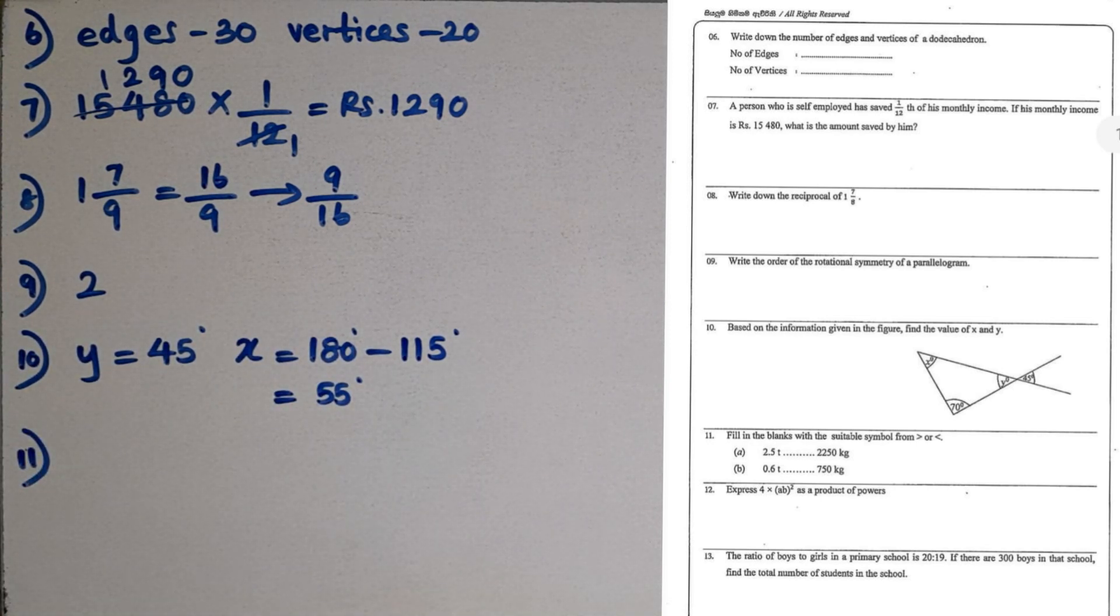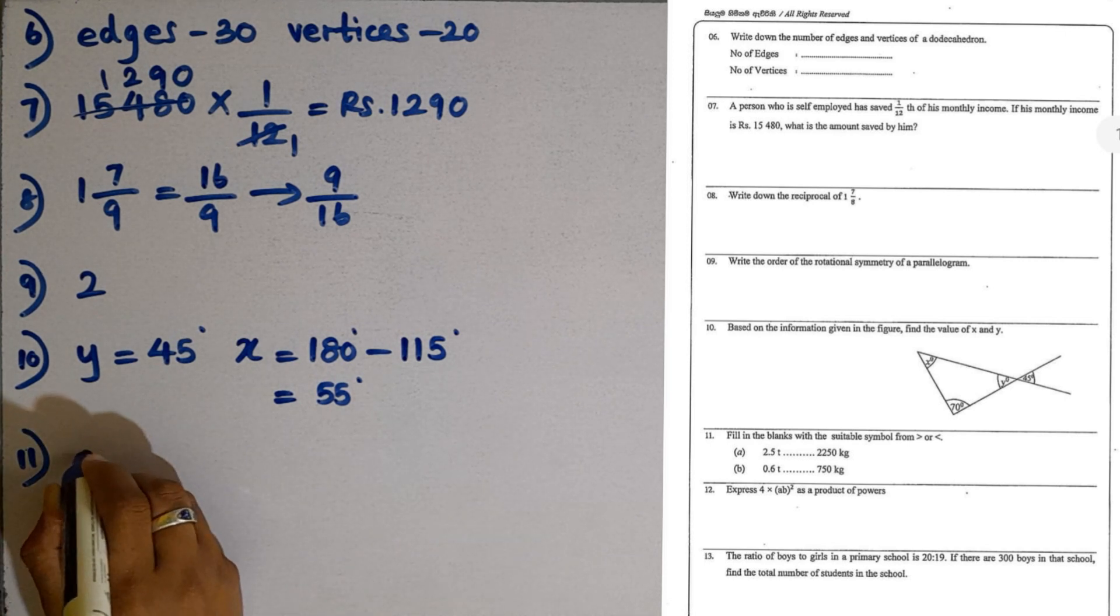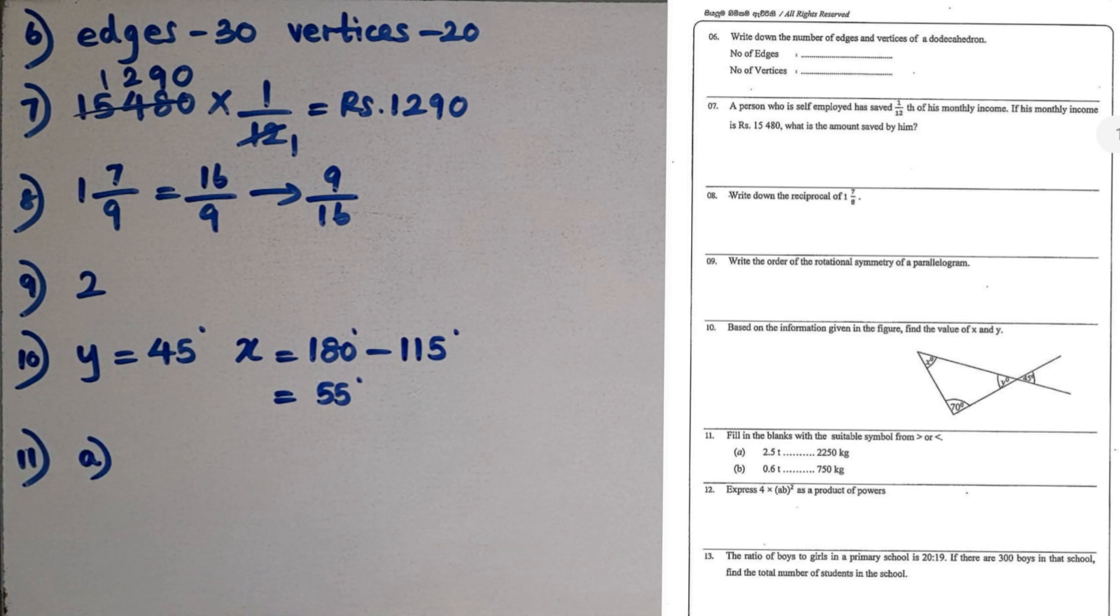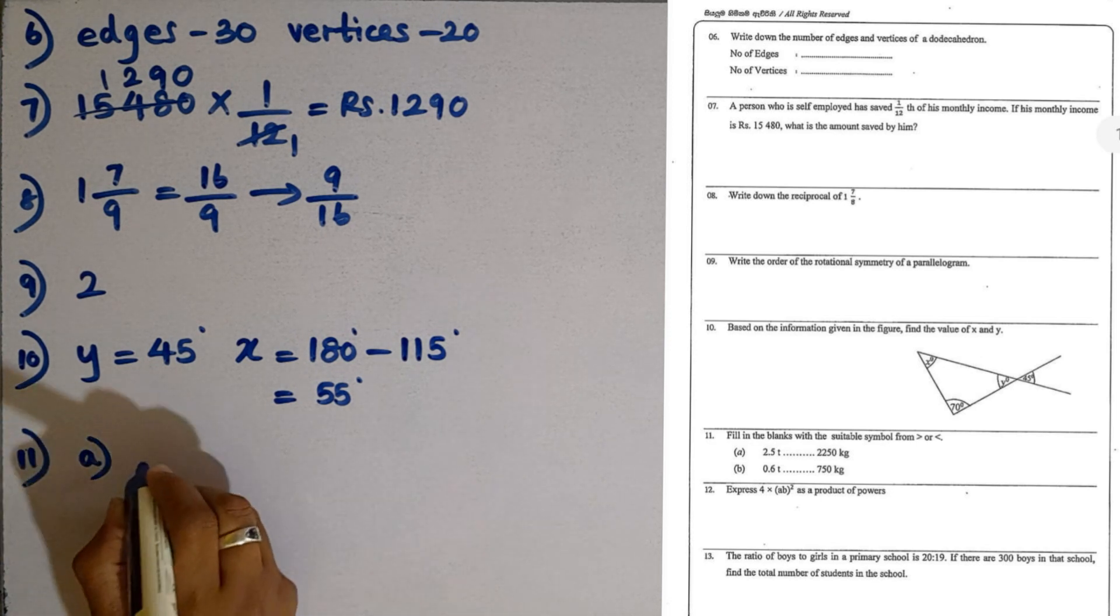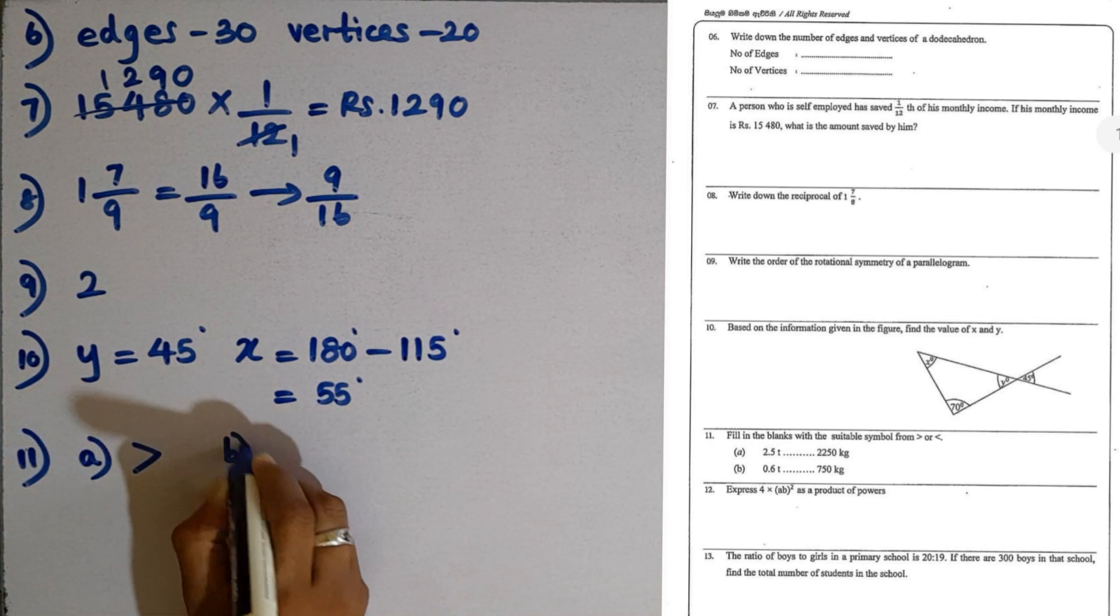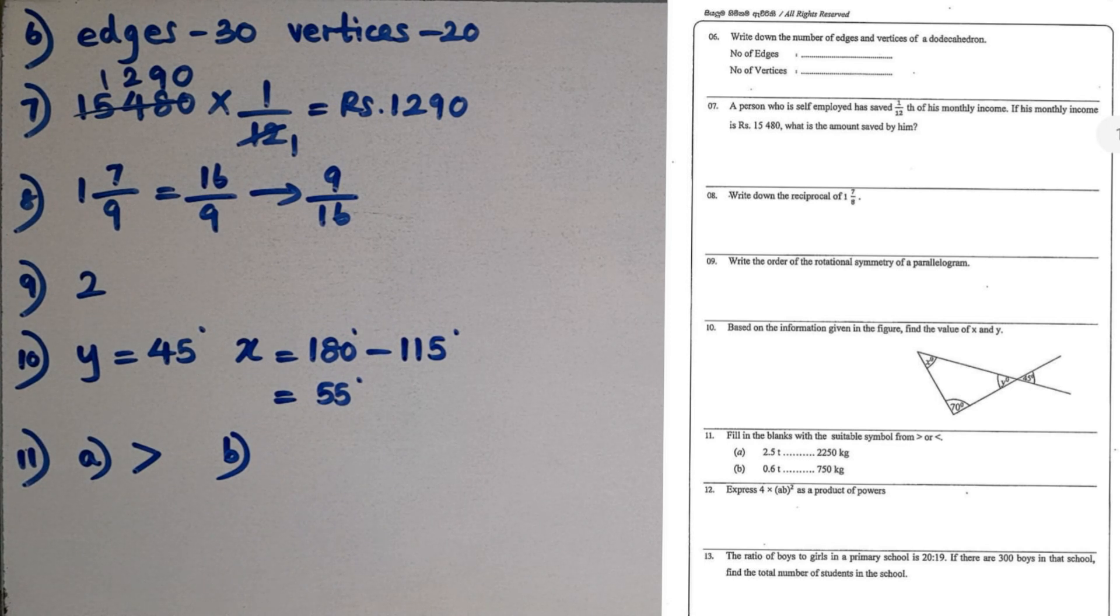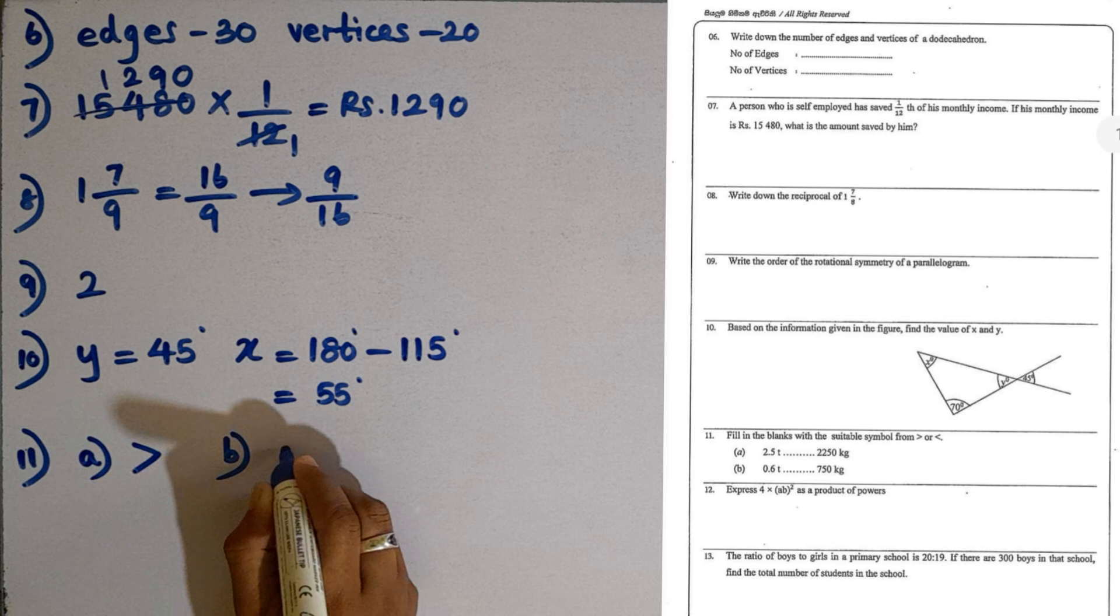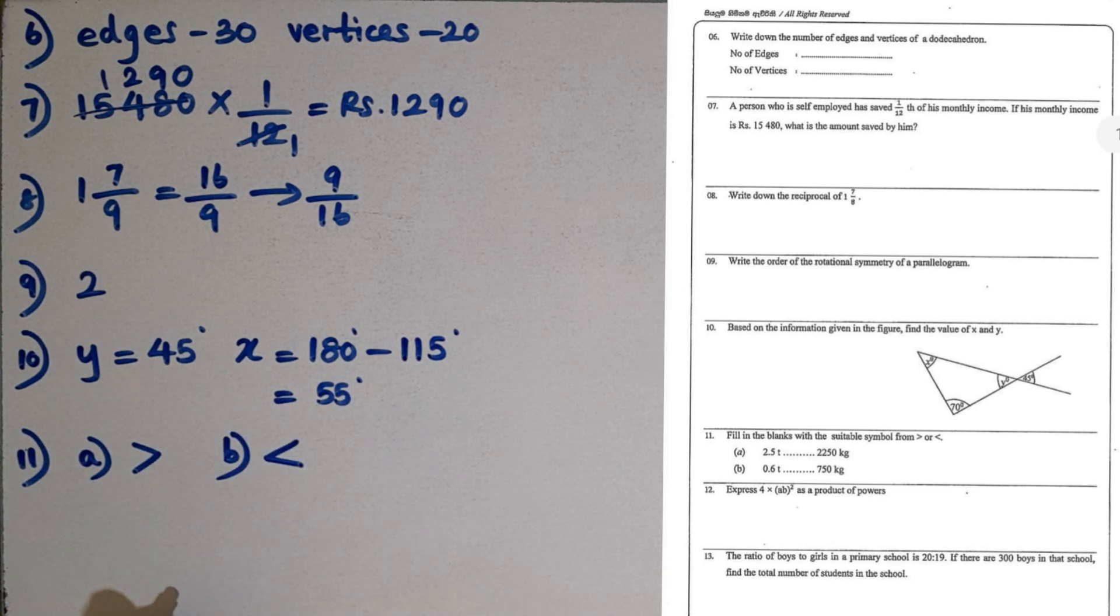Question number 11. Fill in the blanks with greater than or less than. Part a: 2.5 tons versus 2250 kilograms. If you convert 2.5 tons to kilograms, that's 2500 kilograms, which is greater than 2250. Part b: 0.6 tons versus 750 kilograms. 0.6 tons equals 600 kilograms, so 750 is larger. Use the less than sign.